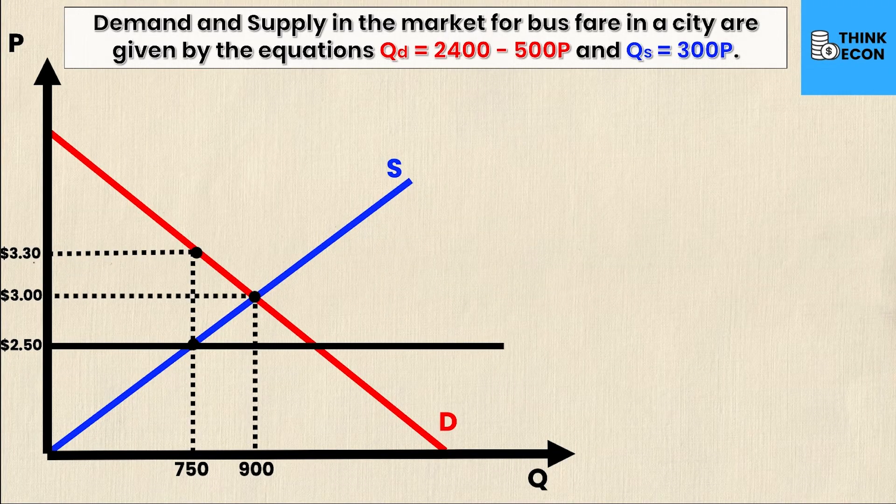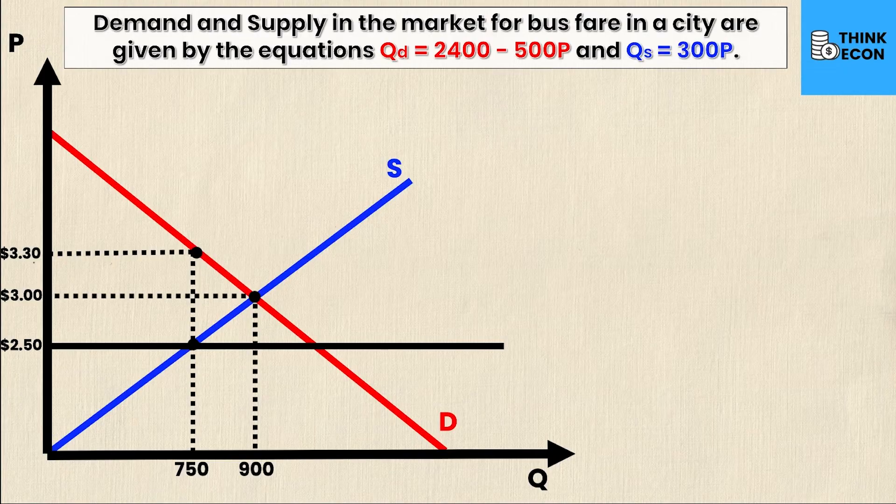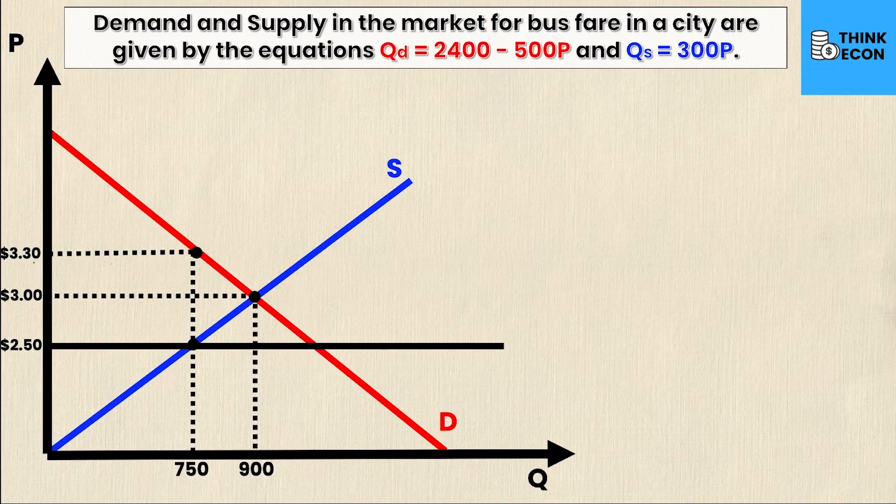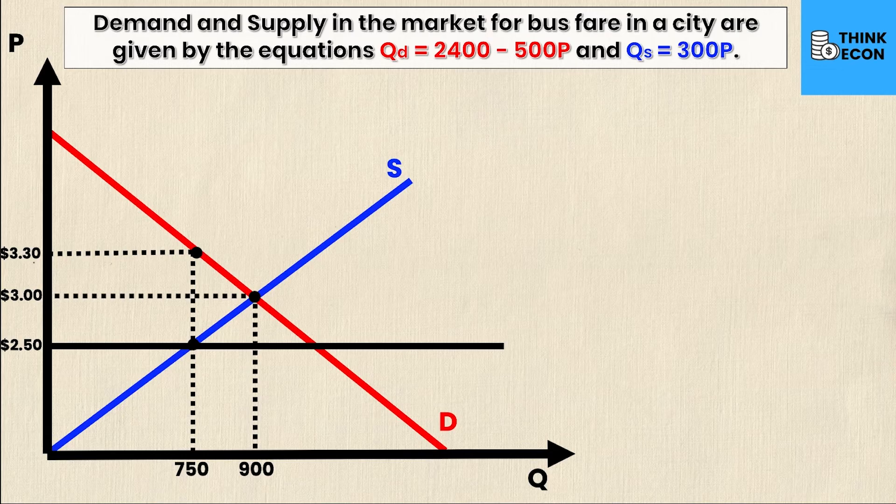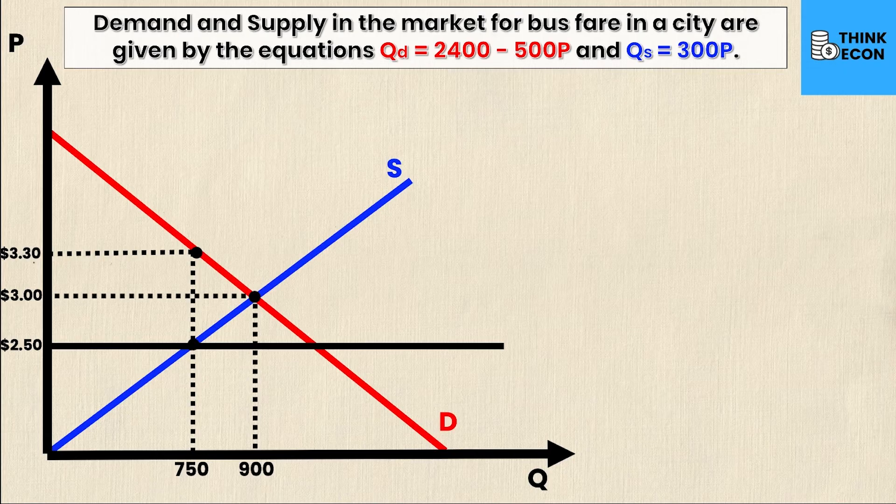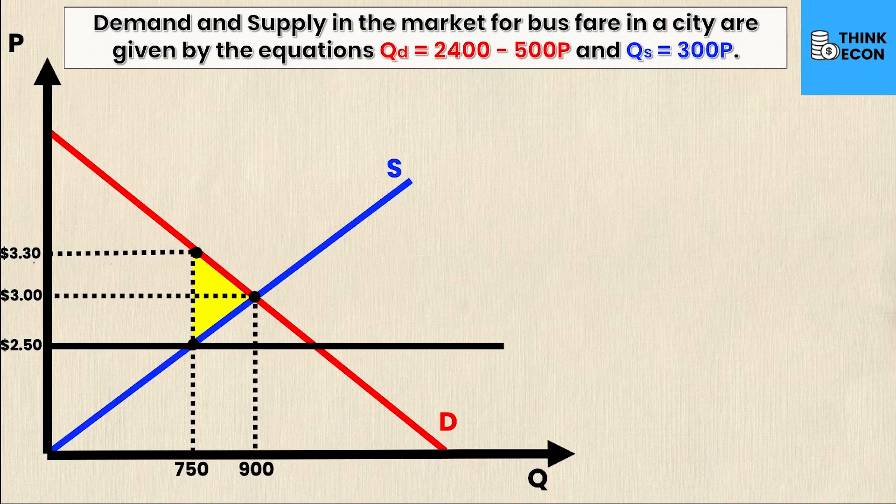First, let's recap what we did in part one. This will make a lot more sense if you watch that video first. Demand and supply in the market for bus fare are given by the equations Qd = 2400 - 500P and Qs = 300P. We calculated the equilibrium of $3 for price and 900 bus tickets for quantity. We then calculated this yellow triangle as deadweight loss, and now we'll be looking at the consumer and producer surplus.